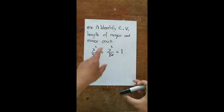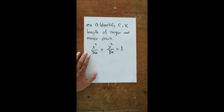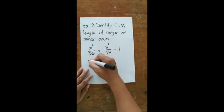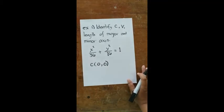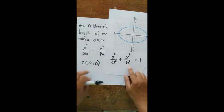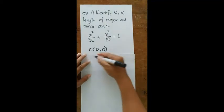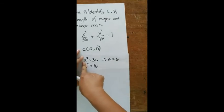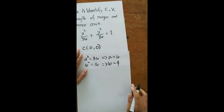For our first example, we identify the center, vertices, and lengths of the major and minor axes given x²/36 + y²/16 = 1. This is clearly centered at the origin (0, 0). Matching to x²/a² + y²/b², we get a² = 36 and b² = 16, so a = 6 and b = 4.